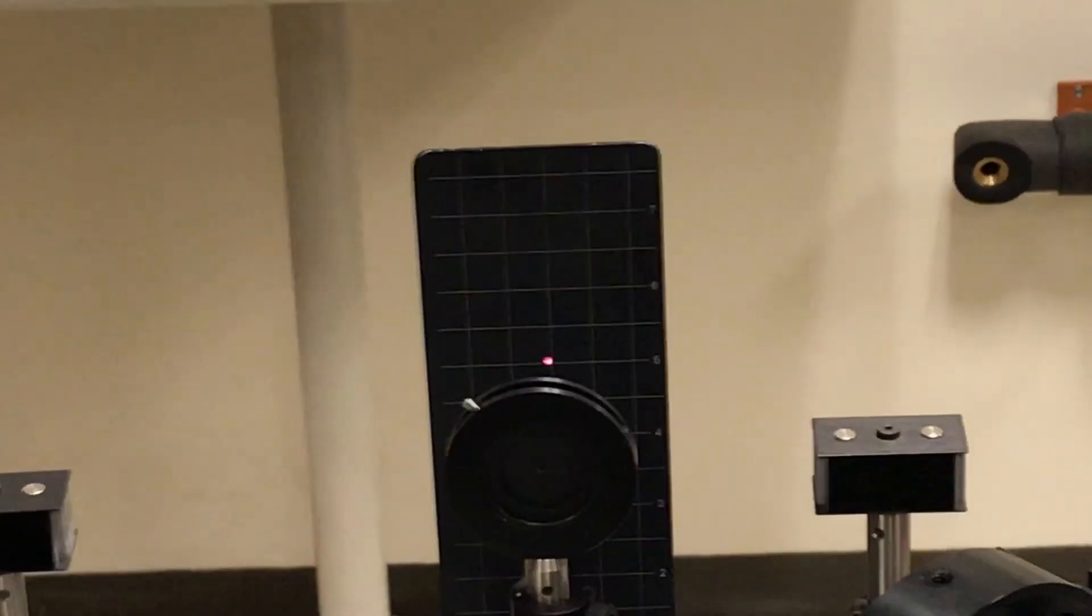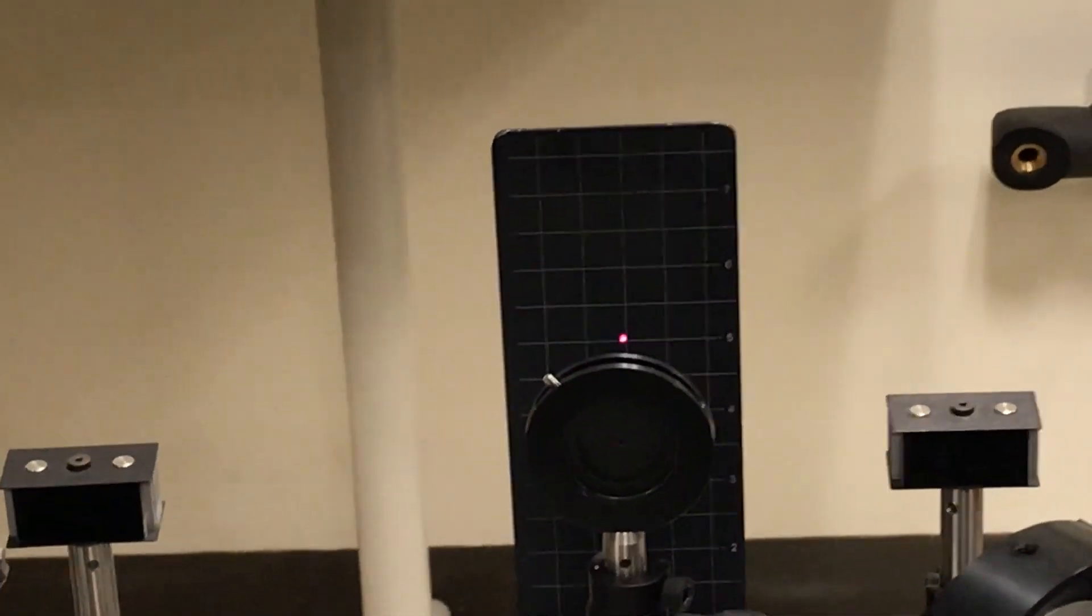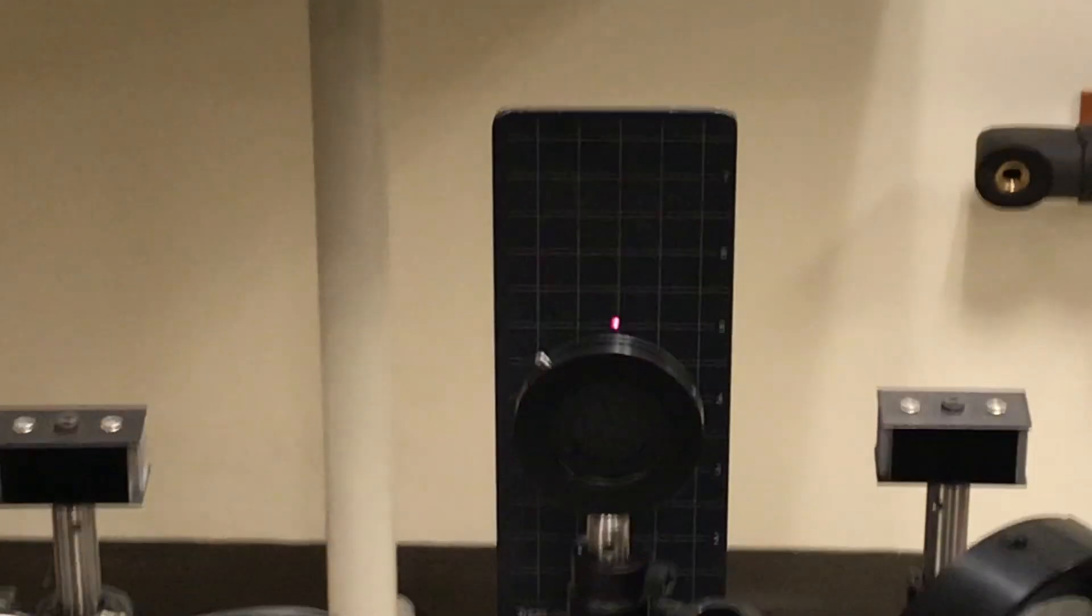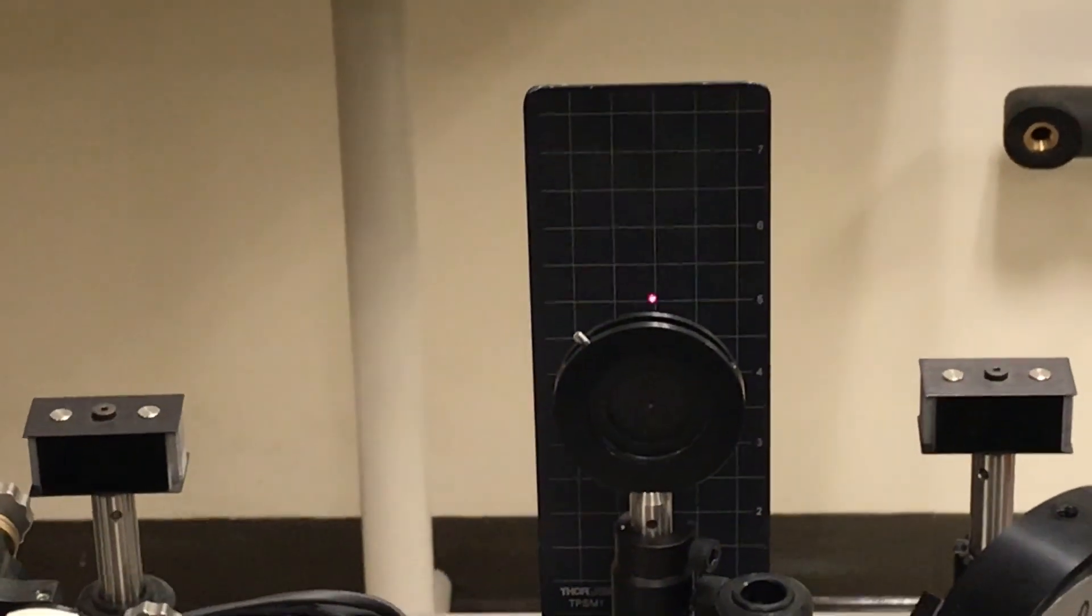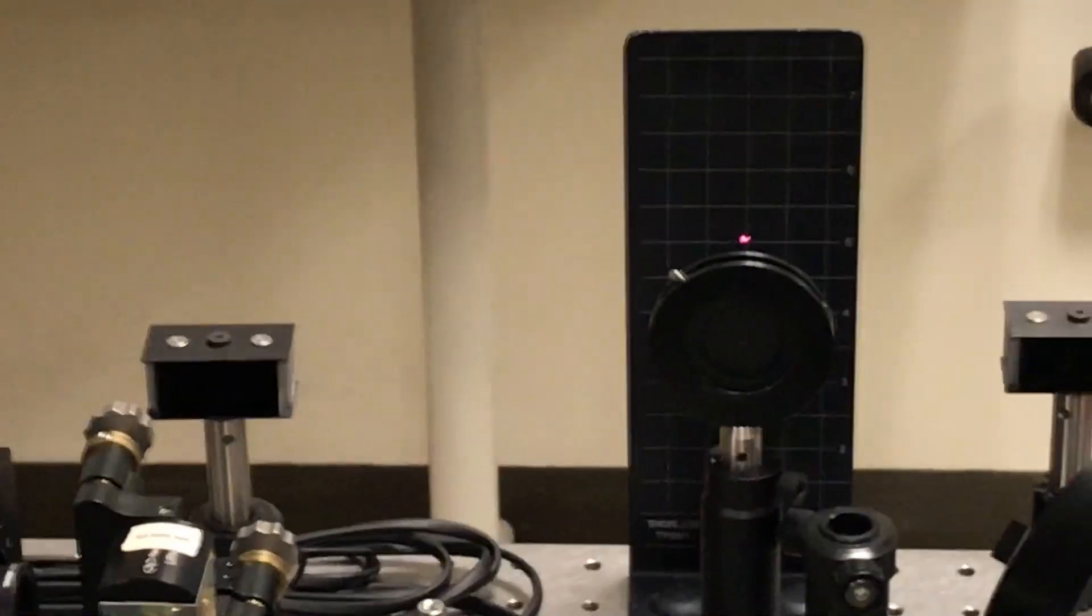So my laser beam is going through that aperture and hitting the backstop back there. This beam's set up to be at five inches, so you can kind of make out the five inch horizontal there. Everything's just about right. Now I'm going to put my alignment tool on, let me just walk over there.